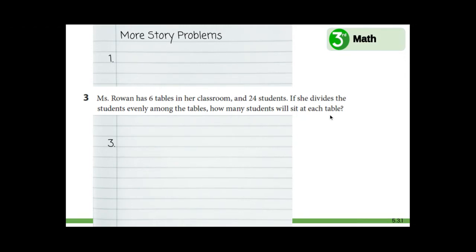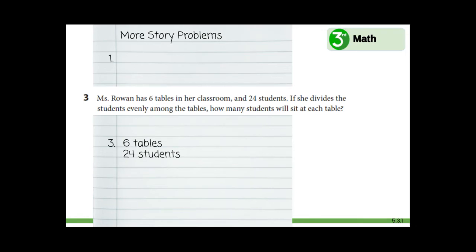What do we know? We know that Ms. Rowan has six tables. Instead of writing the whole thing that we know, we're just going to write "six tables." Go ahead and write that in your notebook beside number three. One thing we know is that there are six tables. What else do we know? There are 24 students. So on the next line, go ahead and write "24 students." If you need to pause the video to make your work look like mine in your notebook, you can.